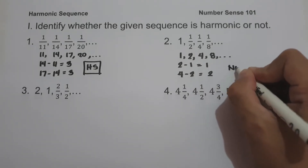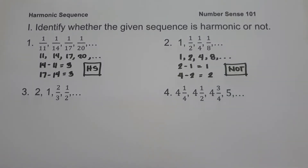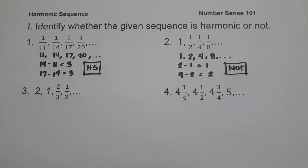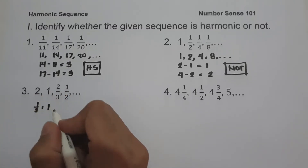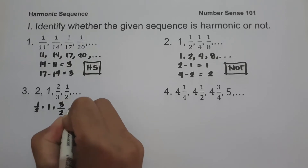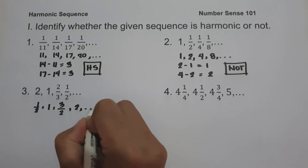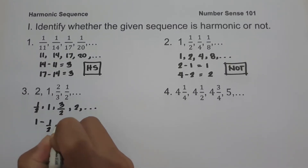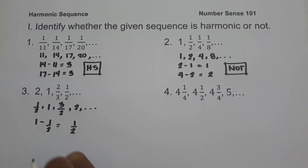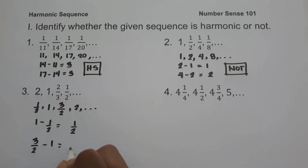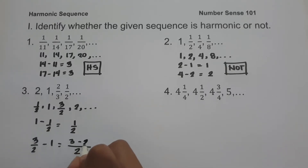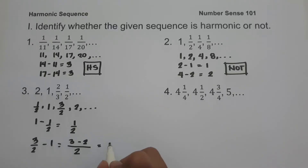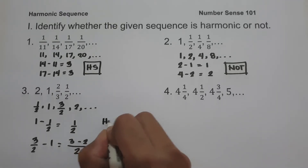On number 3, we have 2, 1, 2/3, 1/2. The reciprocals are 1/2, 1, 3/2, 2. The difference between 1 and 1/2 is 1/2, and the difference between 3/2 and 1 is also 1/2. Since we have a common difference, the sequence on number 3 is an example of a harmonic sequence.